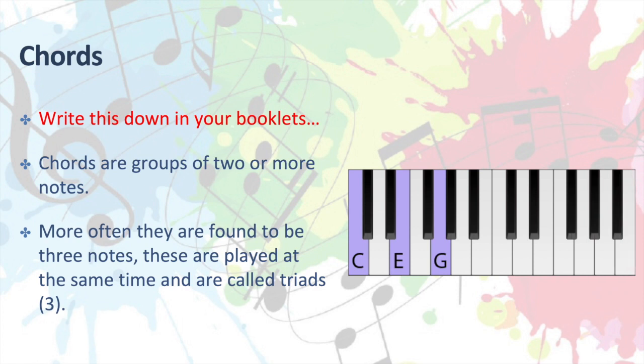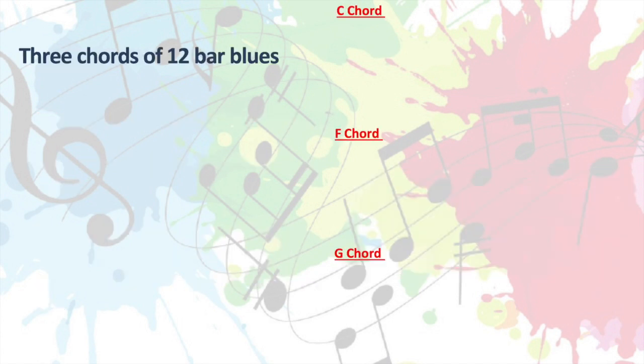This is an example of how a chord would look if we were playing it on a keyboard. So we can see here we've got C, E and G, which is a C chord. So it's C, E and G — that's the easiest way to describe it.